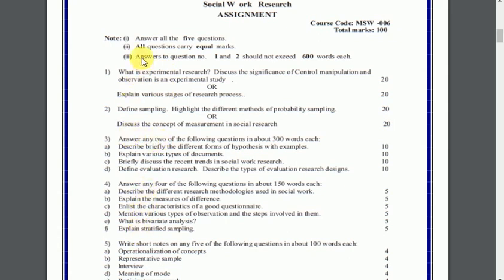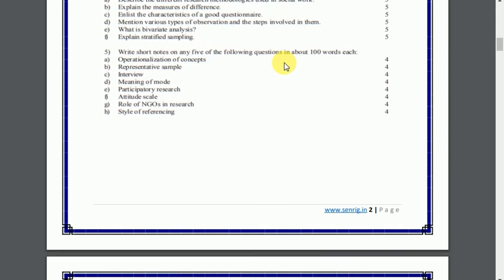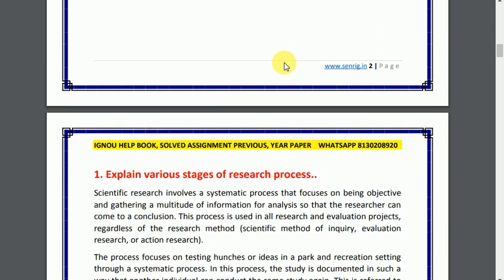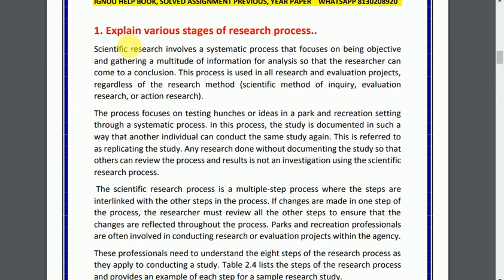The assignment has question 5 sections, and you need to attempt questions 1 and 2. The word limit is 600 words. Let's go to question number 1: explain the various stages of the research process. Read the question carefully — explain various stages of the research process.